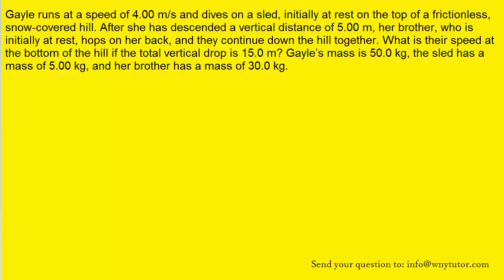Please try this question on your own before moving on. To begin this problem, we can draw a picture showing Gale running towards the sled and diving on it. The initial speed of Gale was given as 4 meters per second. The sled is initially at rest, so its initial speed is 0. And then when Gale jumps on it, they become attached to one another.